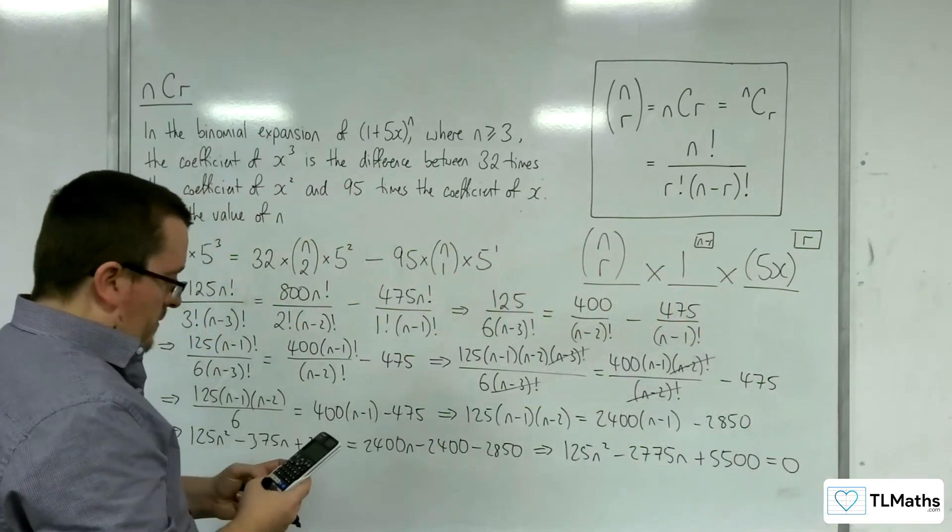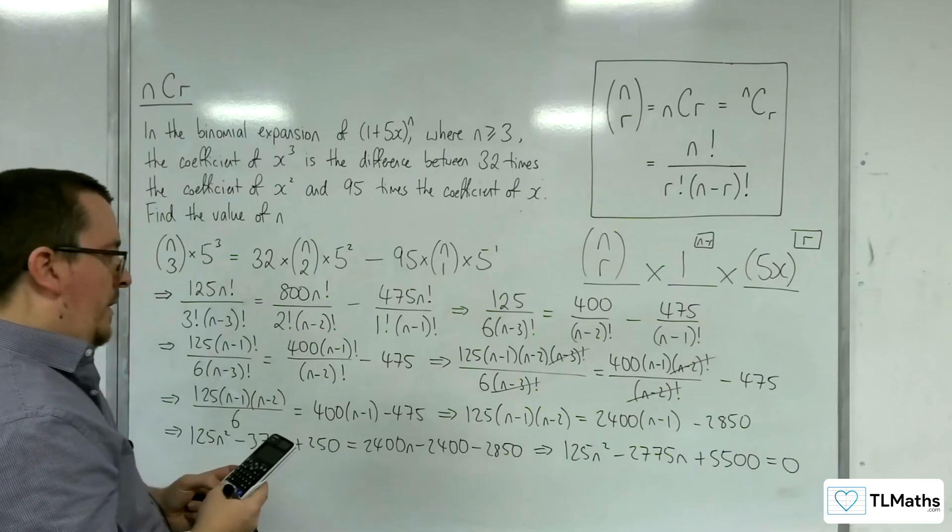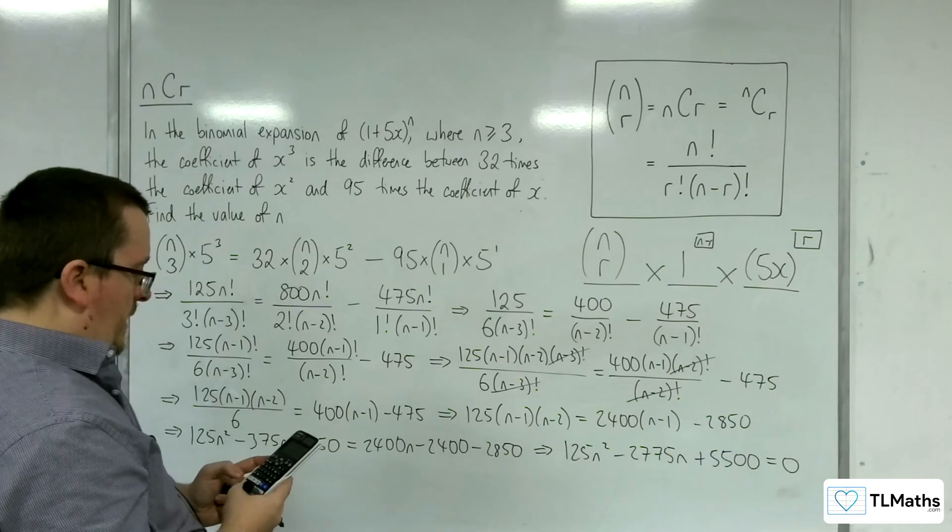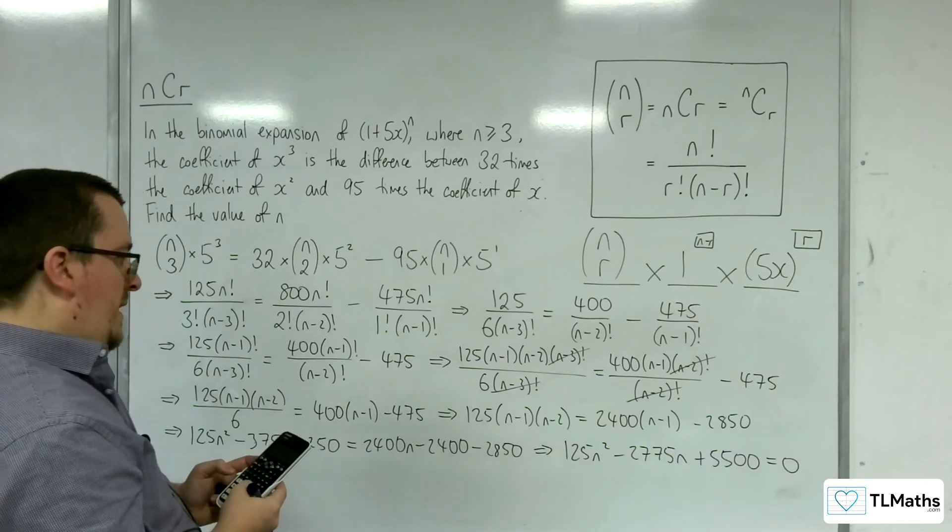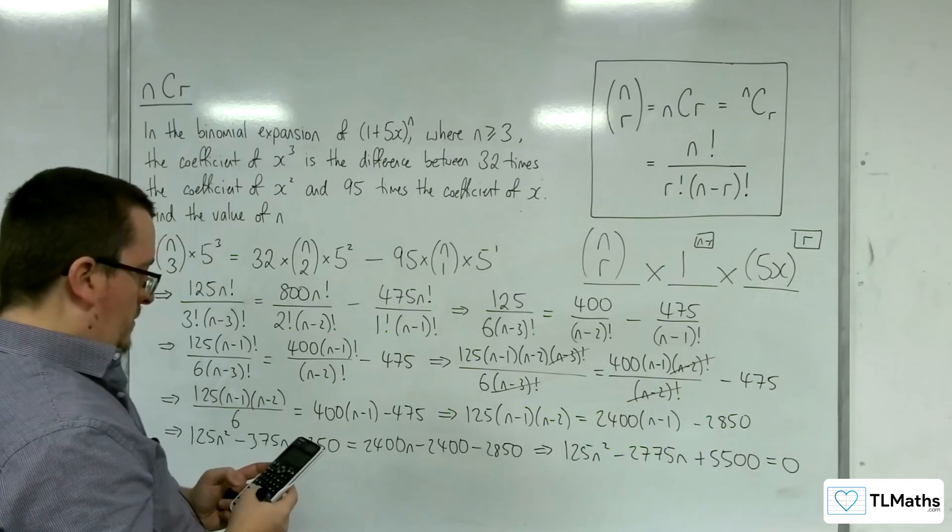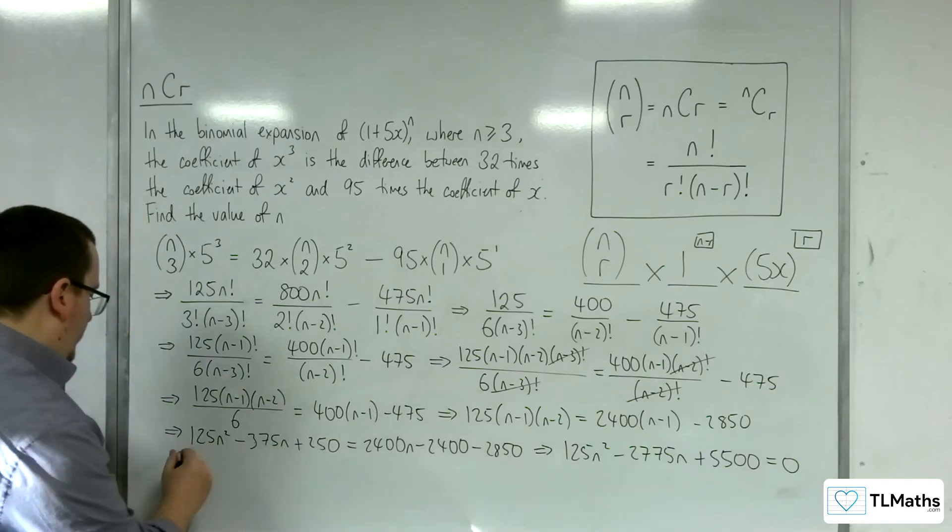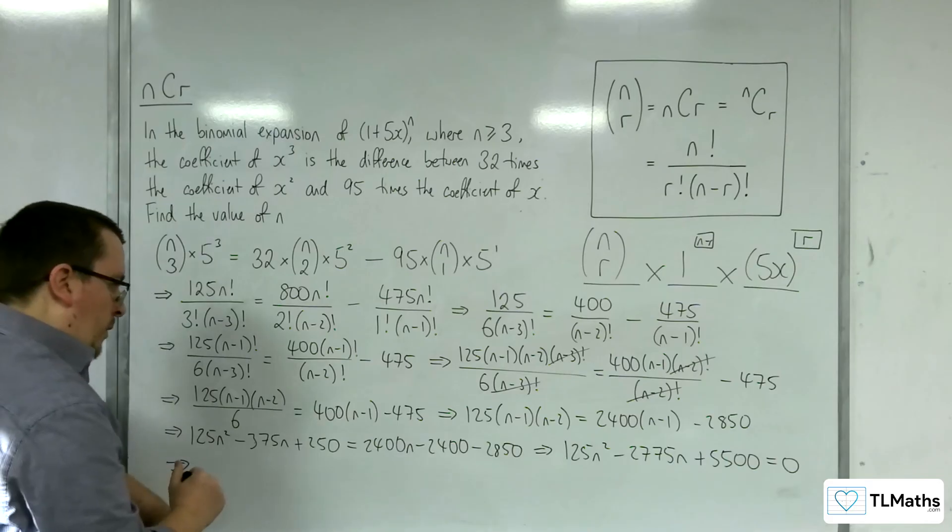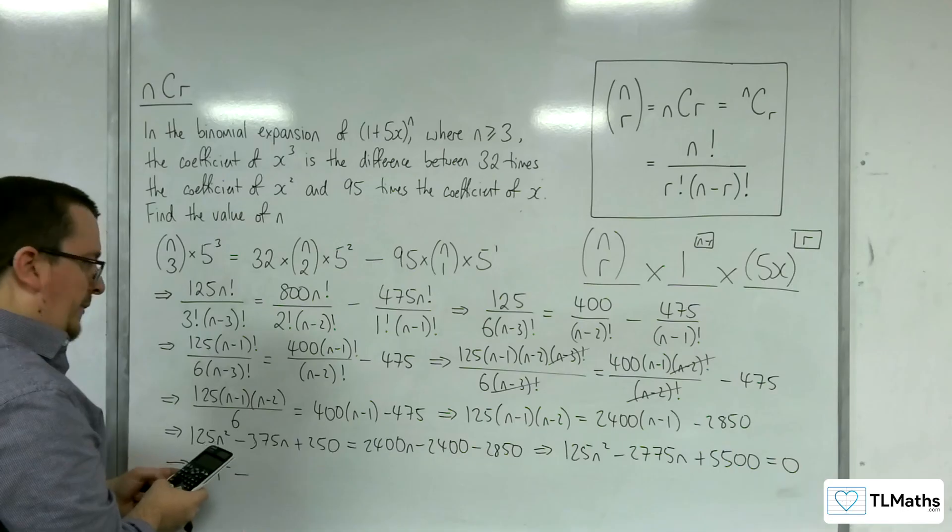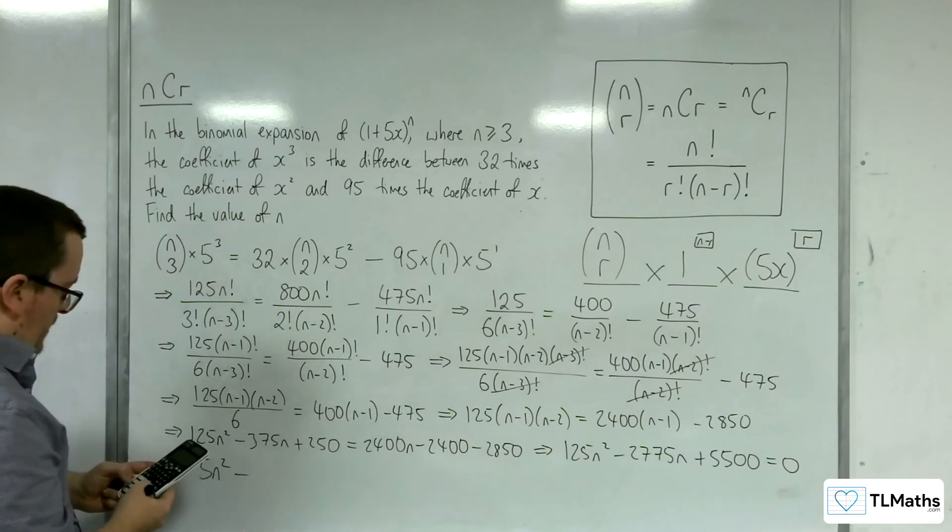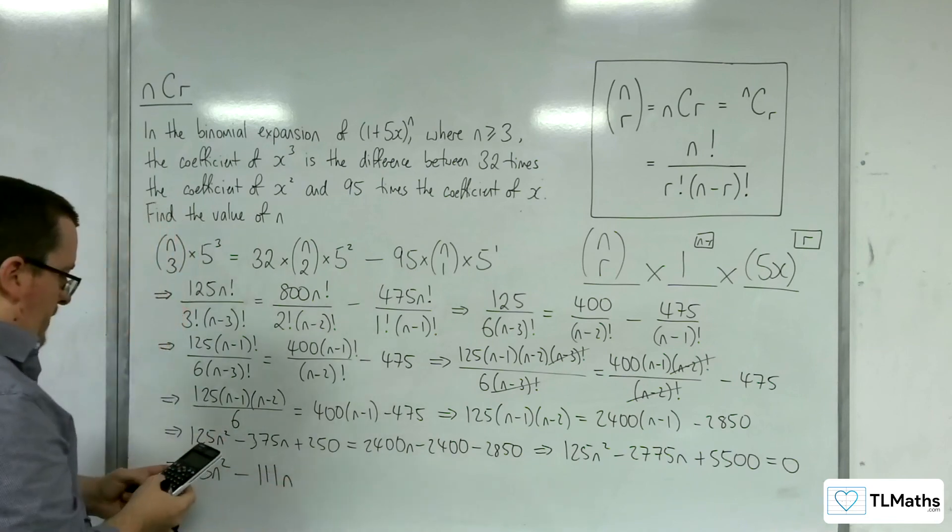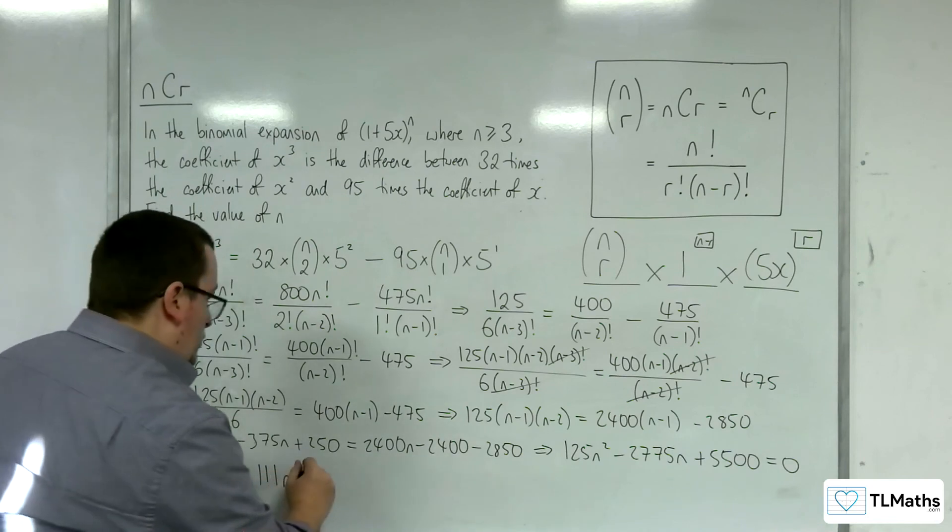Right, now I can definitely divide through by 25 at least. I can divide through by 25, so I can get 5n squared, take away 2,775 divided by 25 is 111n, and then 5,550 divided by 25 is 222 equals 0.